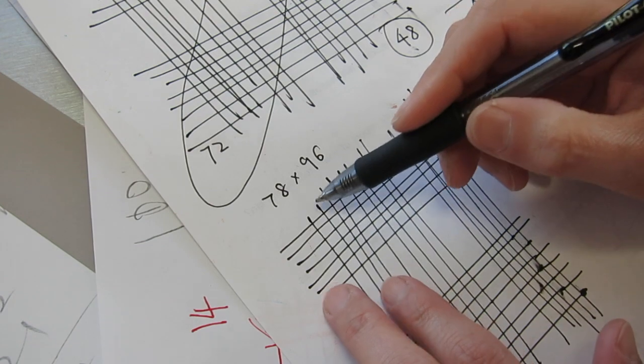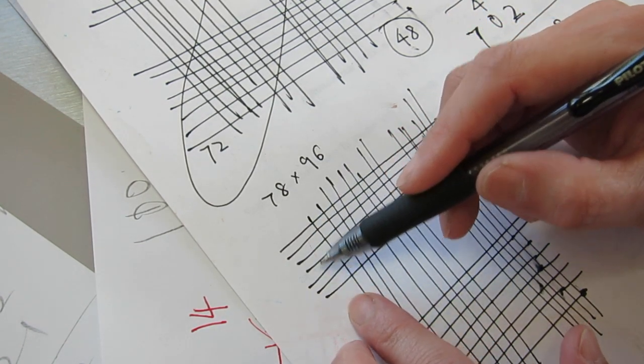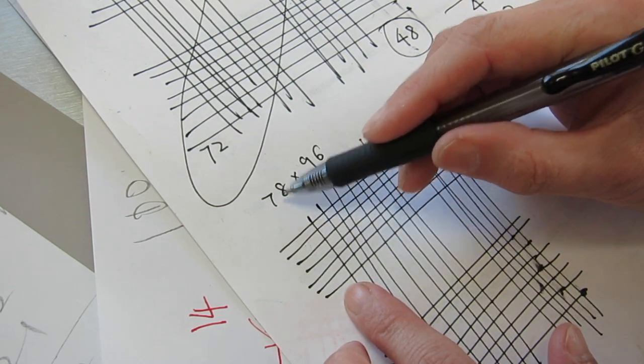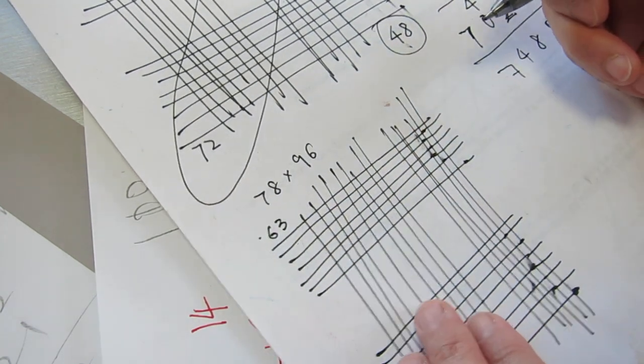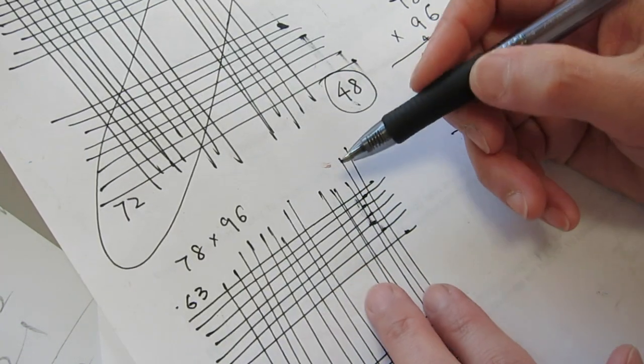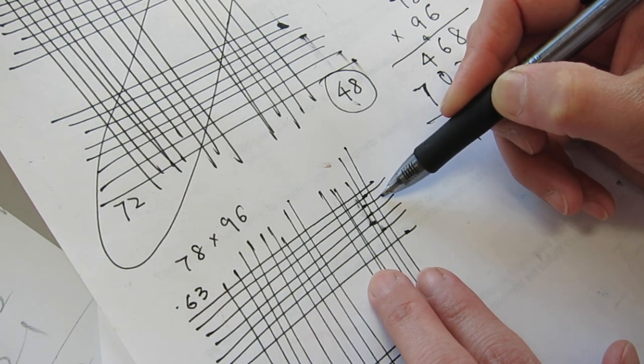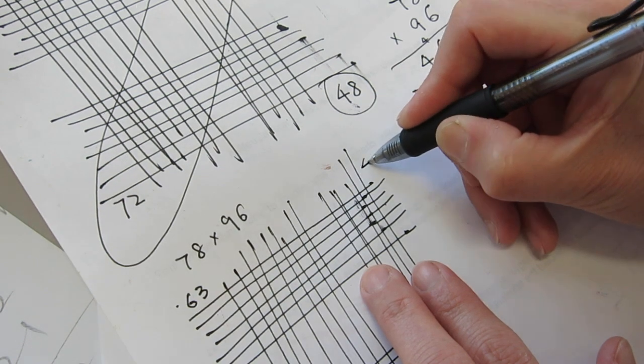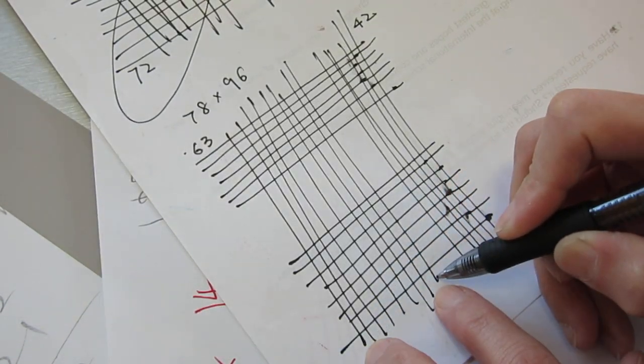Okay. So this one is 7. 1, 2, 3, 4, 5, 6, 7. And this one is 9. 7 times 9 is 63. And this one is 1, 2, 3, 4, 5, 6. And 1, 2, 3, 4, 5, 6, 7. 6 and 3 is 42.